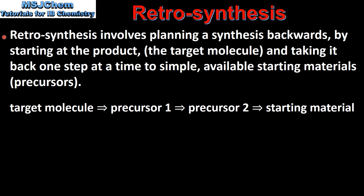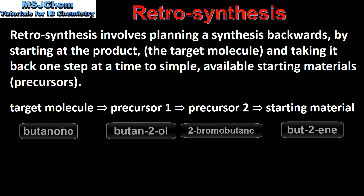So as we saw from the previous example, retrosynthesis involves planning a synthesis backwards, by starting at the product, which is called a target molecule, and taking it back one step at a time to simple available starting materials, which are called precursors.